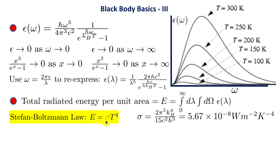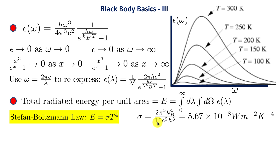Remarkably, this formula was derived long before Planck's formula — before quantum mechanics was even thought about. However, the value of sigma in terms of fundamental constants k_B, c, and h was unknown. When Stefan and Boltzmann discovered this law, they took sigma as an empirically determined constant. The empirical value is 5.67 times 10 to the minus 8 watts per meter squared per degree K to the fourth, which is very close to the theoretical value derived from the Planck formula. The key point is that radiated power per unit area goes as temperature to the power of 4.